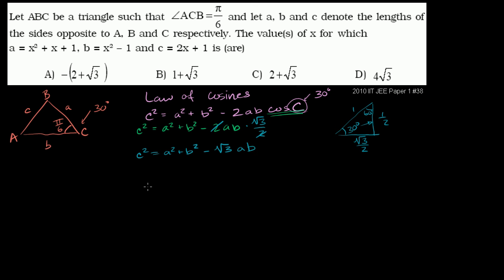Now the next thing is to substitute for a, b, and c using the given expressions. But I want to be careful — I want to make sure it's in a form I can simplify, because if I take a = x² + x + 1 and square it, I'll get something to the fourth power. Same with b. And then there's the √3 term. So let's see if we can rearrange it and quarantine the √3 to make it something we might have hopes of factoring or solving.